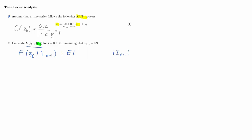We replace Zt with our process equation: 0.2 plus 0.8 times Zt minus 1. The constant coefficients can be taken out of the expectations operator, giving us 0.2 plus 0.8 times the expectation of Zt minus 1 conditional on I_{t-1}, plus the expectation of ut conditional on I_{t-1}.